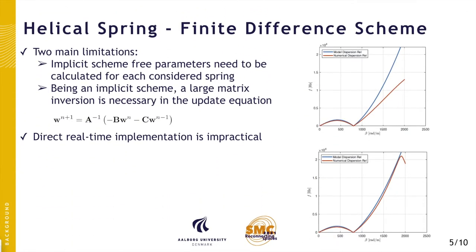There are two main limitations to this simulation approach. The first is that the free parameters of the implicit scheme need to be tuned to better match the model dispersion, as you can see in the figures on the right. This is done based on an optimization procedure which needs to be recomputed for each spring configuration. The second is that being an implicit scheme, a large matrix inversion is necessary in the update equation, making a direct real-time implementation impractical.